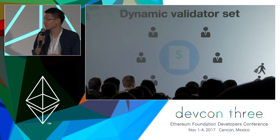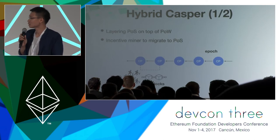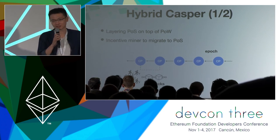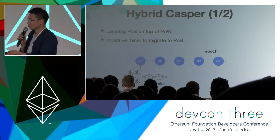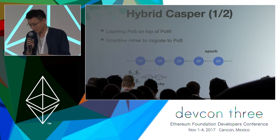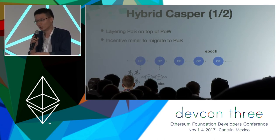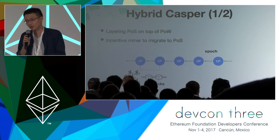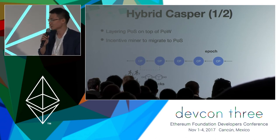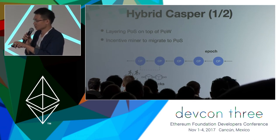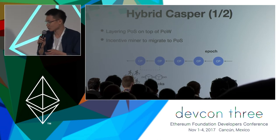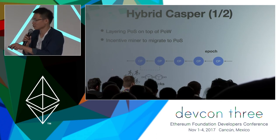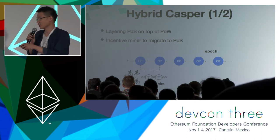Right now CASPER is called hybrid CASPER, because we are laying proof of stake on top of proof of work — the checkpoints are coming from the POW chain. Every 100 blocks is called an epoch, and in each epoch we have a checkpoint that validators need to vote for. One reason for hybrid CASPER is to incentivize miners to migrate to proof of stake more smoothly, because the reward from POS may be greater than from POW, giving them an incentive to migrate.